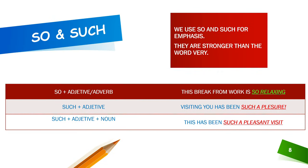Finally, we have 'so' and 'such'. Keep in mind, so and such are used for emphasis and those qualifiers are stronger than very. The structure for so is: so plus adjective or adverb. Example: this break from work is so relaxing — it is just the change that I needed. For such, the structure is: such plus adjective plus noun, where the adjective is optional. Example: visiting you has been such a pleasure. Another example: this has been such a pleasant visit.